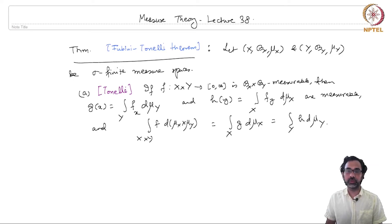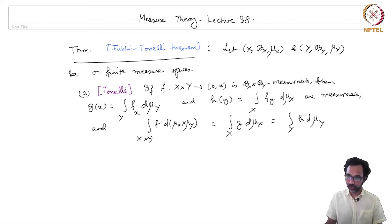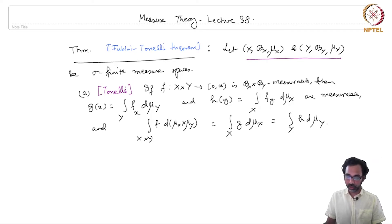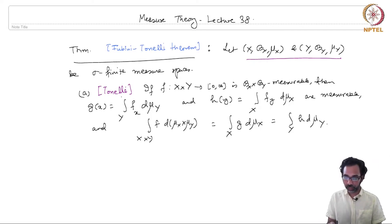Finally, we come to the theorems of Fubini and Tonelli. We fix two sigma finite measure spaces, X and Y, which are both sigma finite. The theorem of Tonelli is as follows.